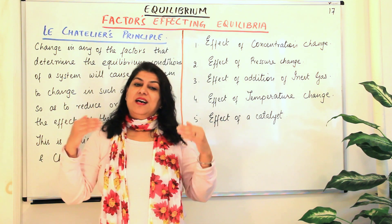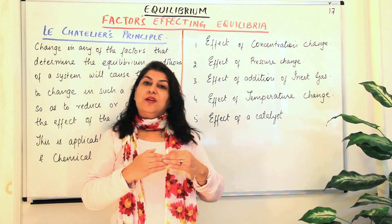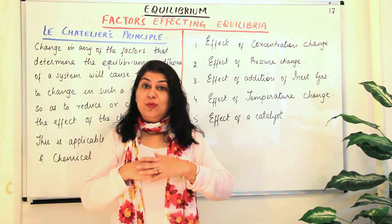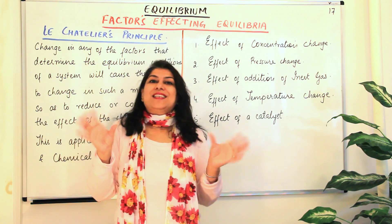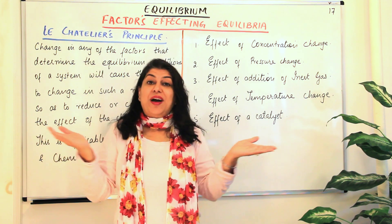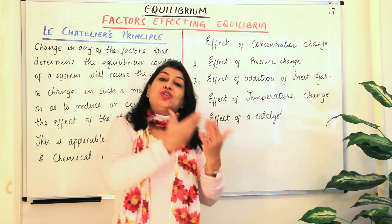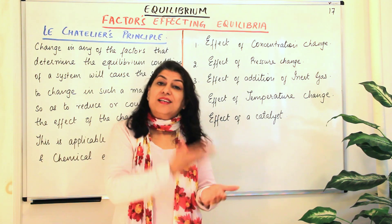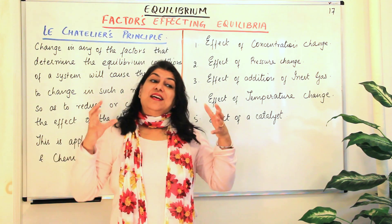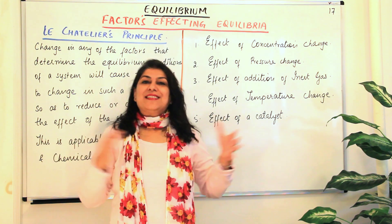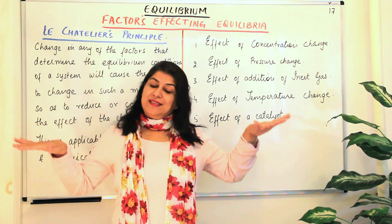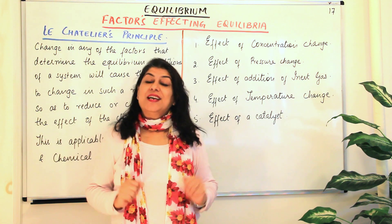In the same way, when a change occurs in a reaction which has already established equilibrium, the equilibrium gets imbalanced. And when it gets imbalanced, it tries to counteract the effect of that change, and by doing that it comes back to the state of equilibrium and establishes equilibrium once more.